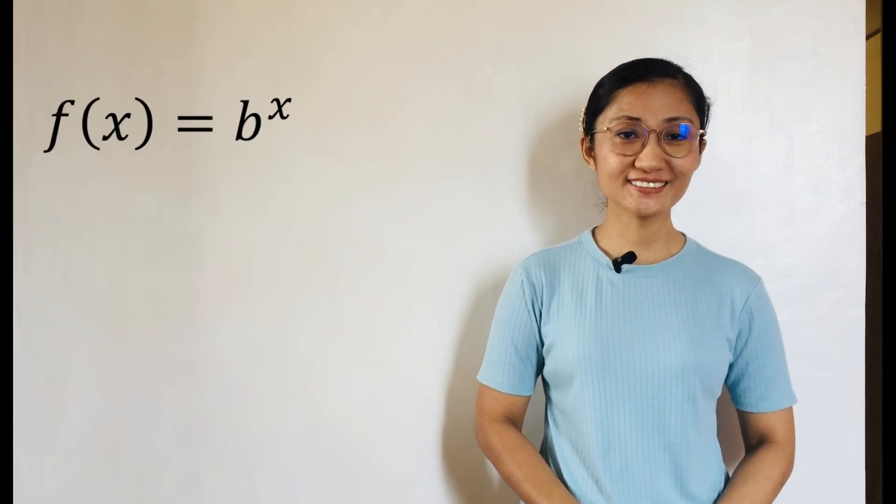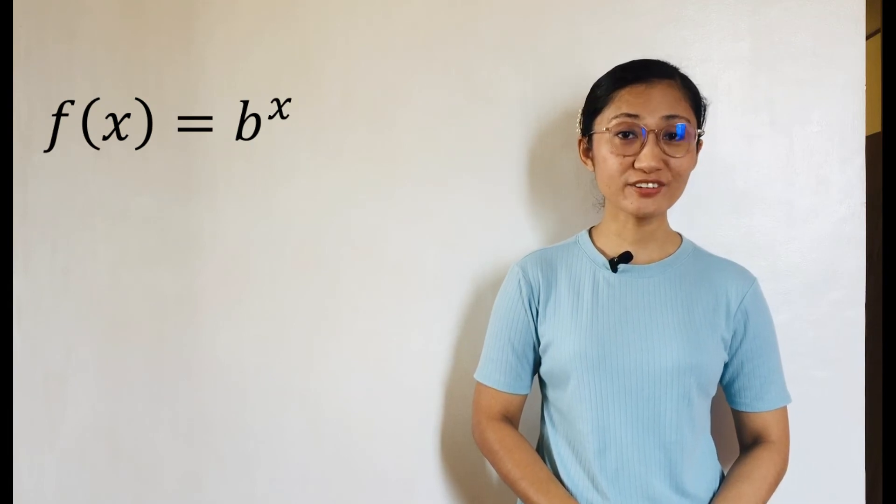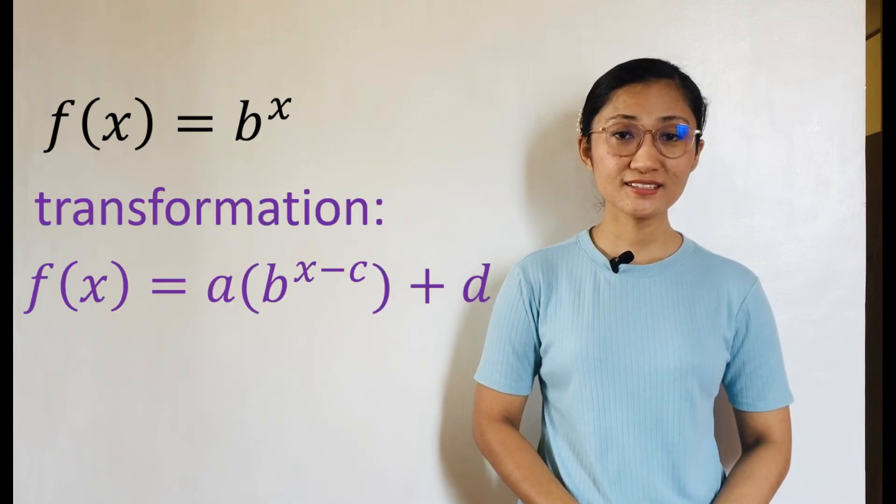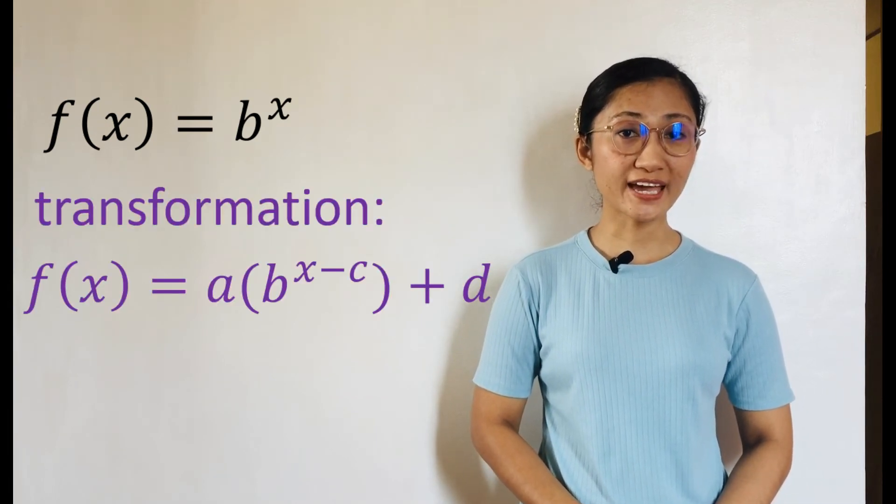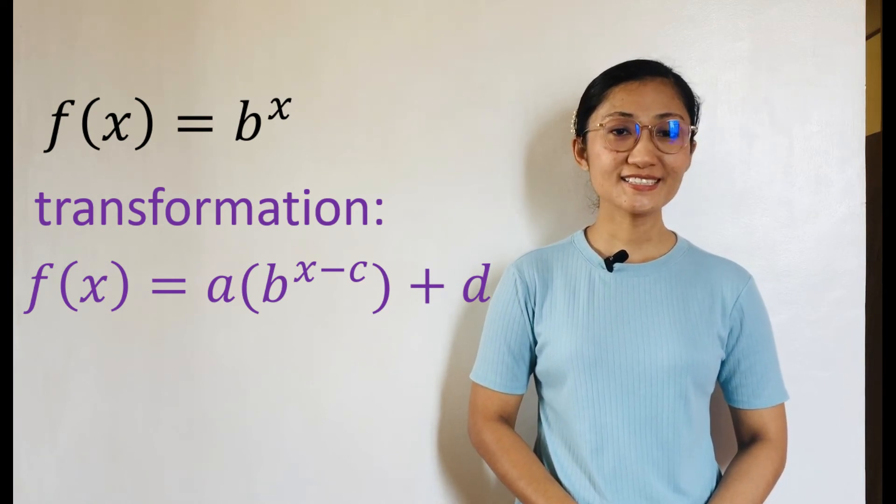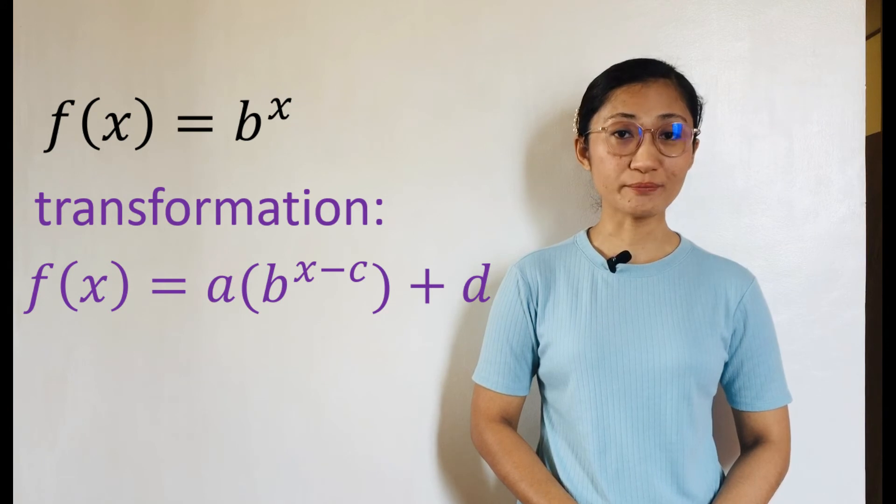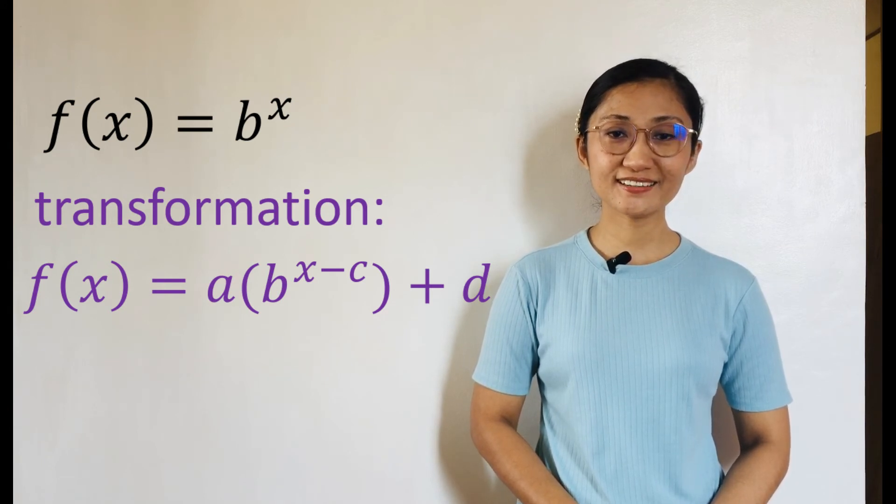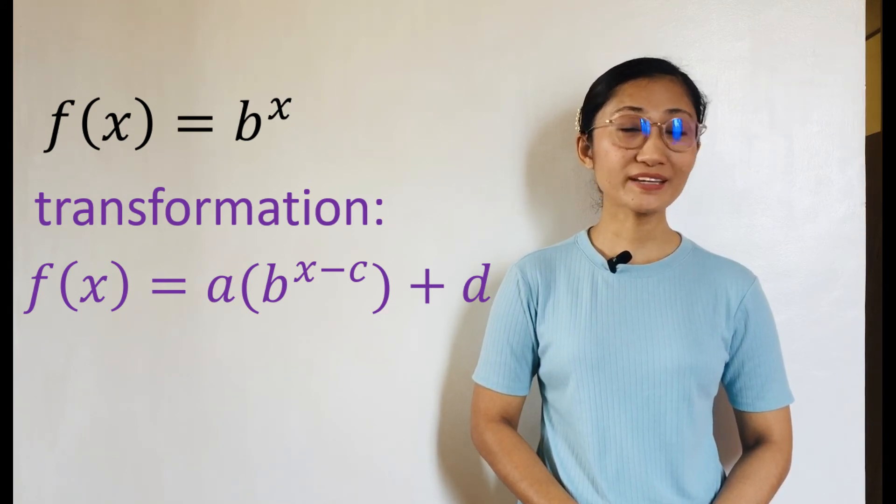You just saw the behavior of an exponential function in example 1. The exponential function F of X equals B to the X can be transformed to F of X equals A times B to the X minus C plus D, where A, C, and D are all real numbers, and B still is greater than 0 but cannot be 1. You will see an application of this transformation in the next example.